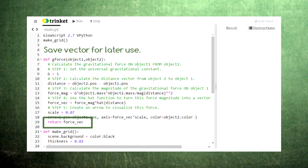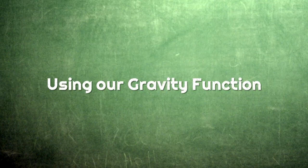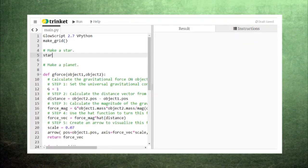At the end of this function, we return the force vector so that we can use it later. Now that we have a set of instructions for creating these force vectors, let's make a star and a planet.